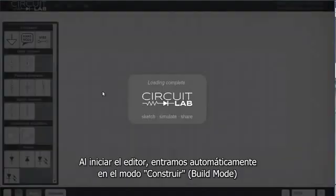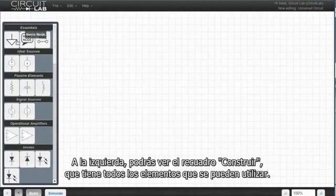When you start the editor, you are automatically in build mode. On the left, you'll see the build box, which has all the circuit elements you can use.